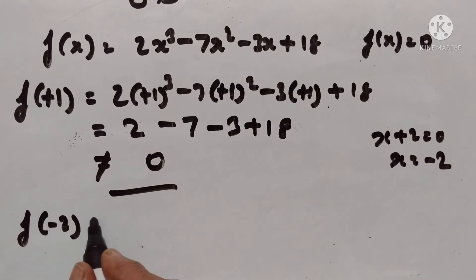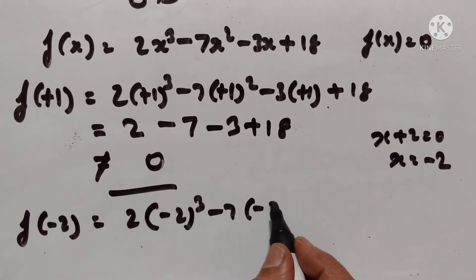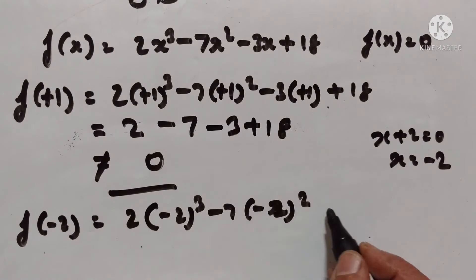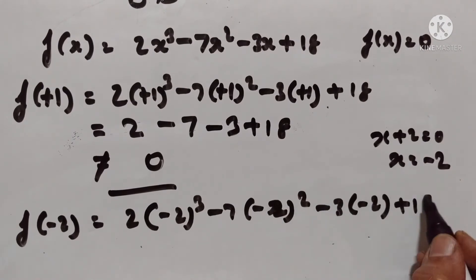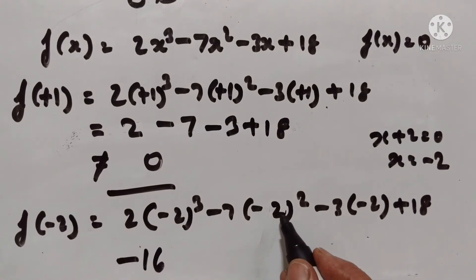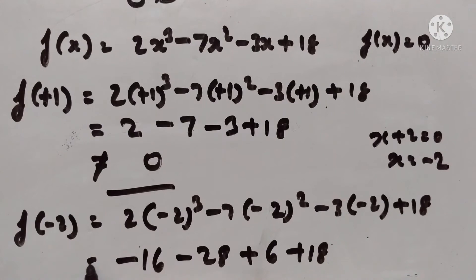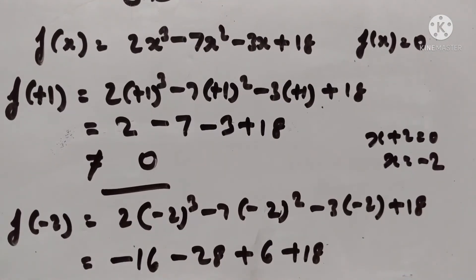f(-2) = 2(-2)³ - 7(-2)² - 3(-2) + 18. (-2)³ = -8, (-2)² = 4, so 2(-8) - 7(4) + 6 + 18 = -16 - 28 + 6 + 18. This is not equal to 0, so x + 2 is not a factor of this expression.